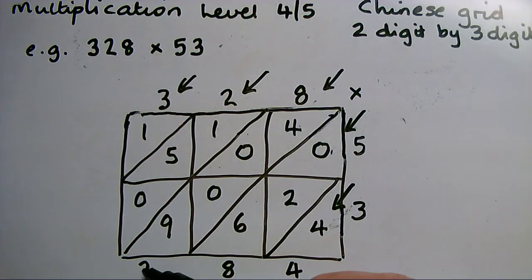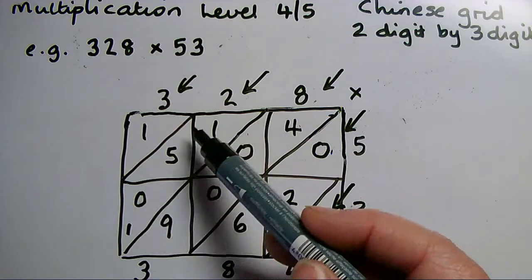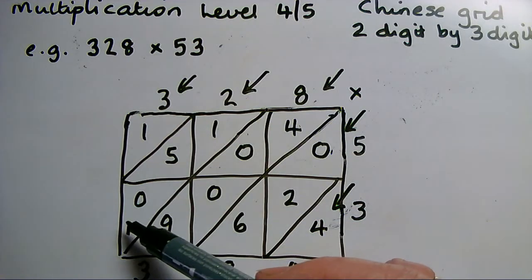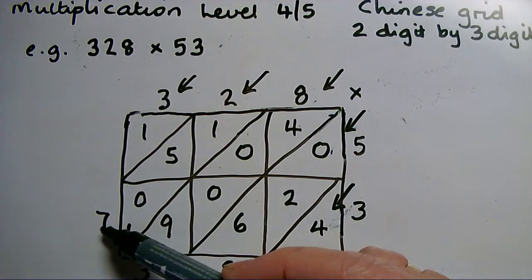Now I'm going to add the whole of this next diagonal: 1 and 5 is 6 and 1 there is 7. And in this top corner there, just the 1.